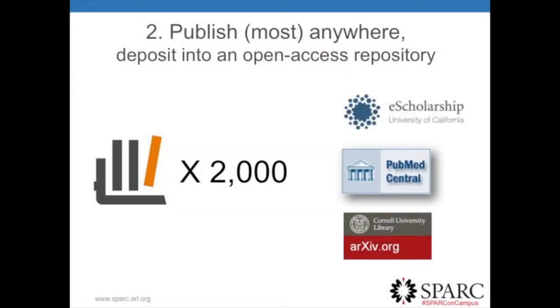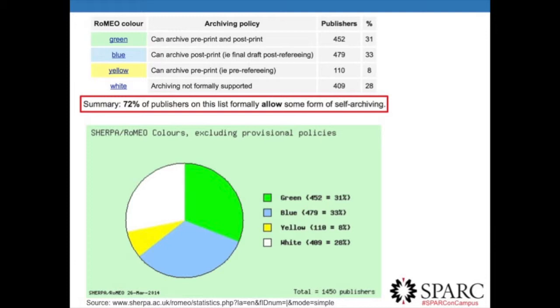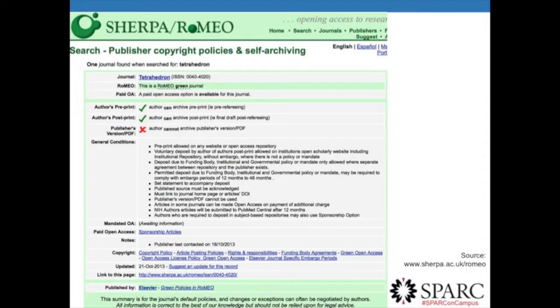Self-archiving means publishing in most journals and then making a copy of your article — either pre- or post-peer-review — freely available online. There are now a little over 2,000 repositories like e-scholarship around the world. I believe e-scholarship itself was one of the very first institutional repositories, established in 2002. The vast majority — about 72 percent — of publishers will allow their authors to make some form of their article freely available online. This is something many authors aren't as aware of as we'd like, because we essentially already have the permission to solve a lot of this problem. This data comes from a project with a fantastic name: SHERPA/RoMEO.